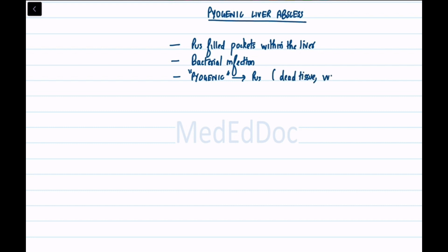Pyogenic liver abscess refers to a condition characterized by the formation of pus-filled pockets within the liver. It is primarily caused by a bacterial infection. The term pyogenic indicates the presence of pus, which is a collection of dead tissue, white blood cells, and bacteria.